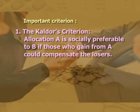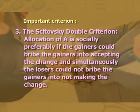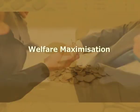Most economists believe a movement is desirable only if no one is worse off and at least one person is better off, but practically most changes result in a reduction of someone's utility unless compensation is provided. Three important criteria are: first, Kaldor's criterion — allocation A is socially preferable to B if those who gain from A could compensate the losers. Second, Hicks' criterion — allocation A is socially preferable to B if those who would lose from A could not profitably bribe the gainers into not making the change. Third, Scitovsky's double criterion — allocation A is socially preferable if the gainers could bribe the losers into accepting the change and simultaneously the losers could not bribe the gainers into not making the change. This criterion implies interpersonal comparisons of utility and fails if individuals do not truthfully reveal their gains and losses.